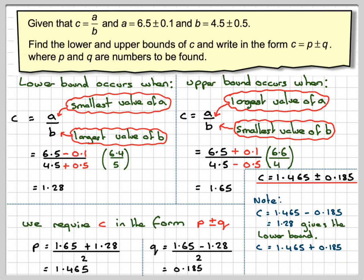And if you work out c equals 1.465 plus 0.185, that will give me 1.65, which happens to be the upper bound.